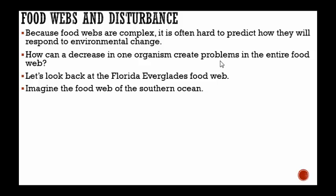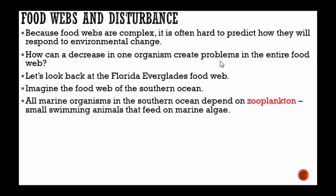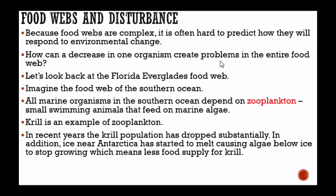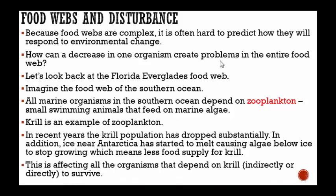Let's imagine the food web of the southern ocean. All marine organisms in the southern ocean depend on zooplankton — small swimming animals that feed on marine algae. Krill is an example of zooplankton. In recent years, the krill population has dropped substantially. Ice near Antarctica has started to melt, causing algae below the ice to stop growing, which means less food supply for the krill. The krill may start to die out, and everything that depends on krill — either directly or indirectly — is going to die too.